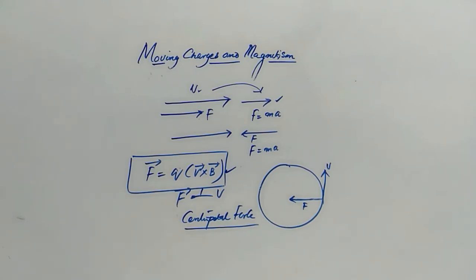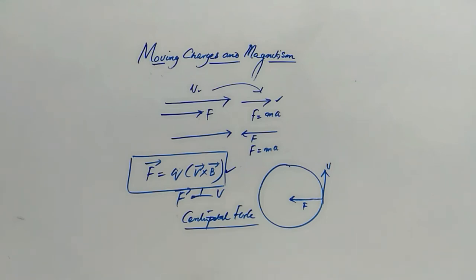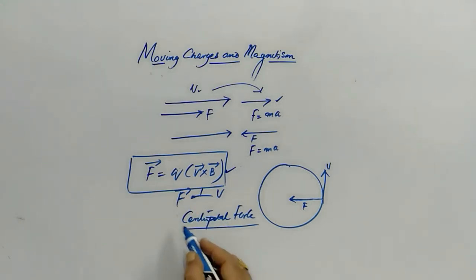When any charged particle is projected with an initial velocity V at an angle theta with the magnetic field direction, it moves in a circular path. The Lorentz force provides the centripetal force. Remember, centripetal force must be provided by some external agency.